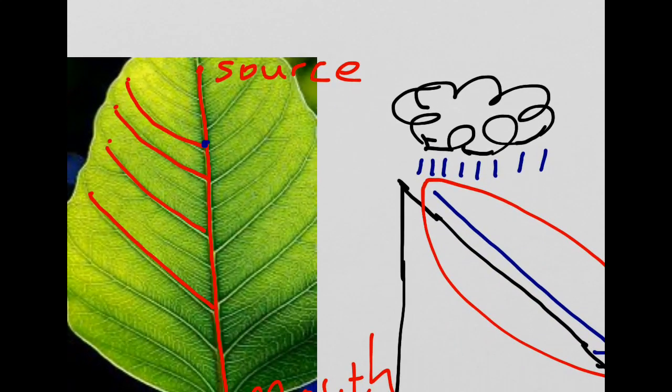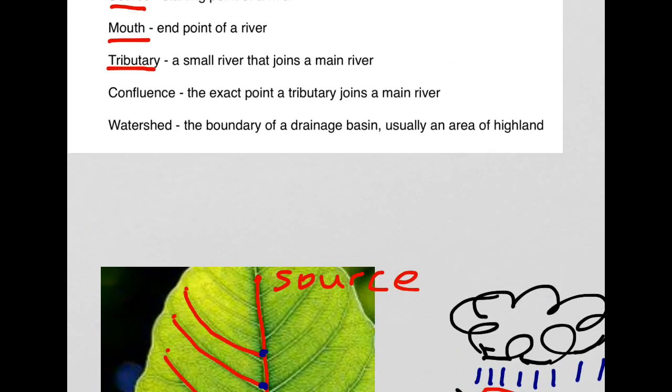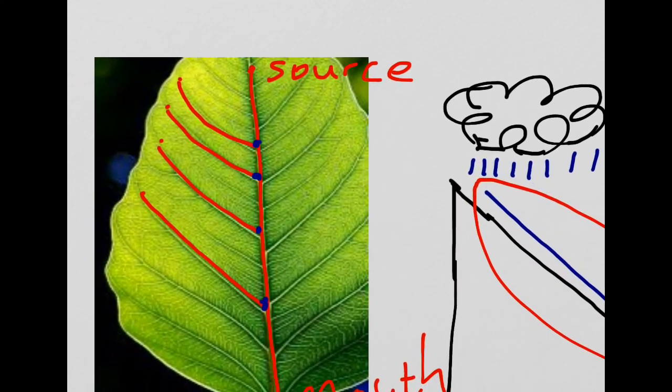The exact point where a tributary joins a main river, highlighted in blue, represents the confluence, the exact point a tributary joins a main river.